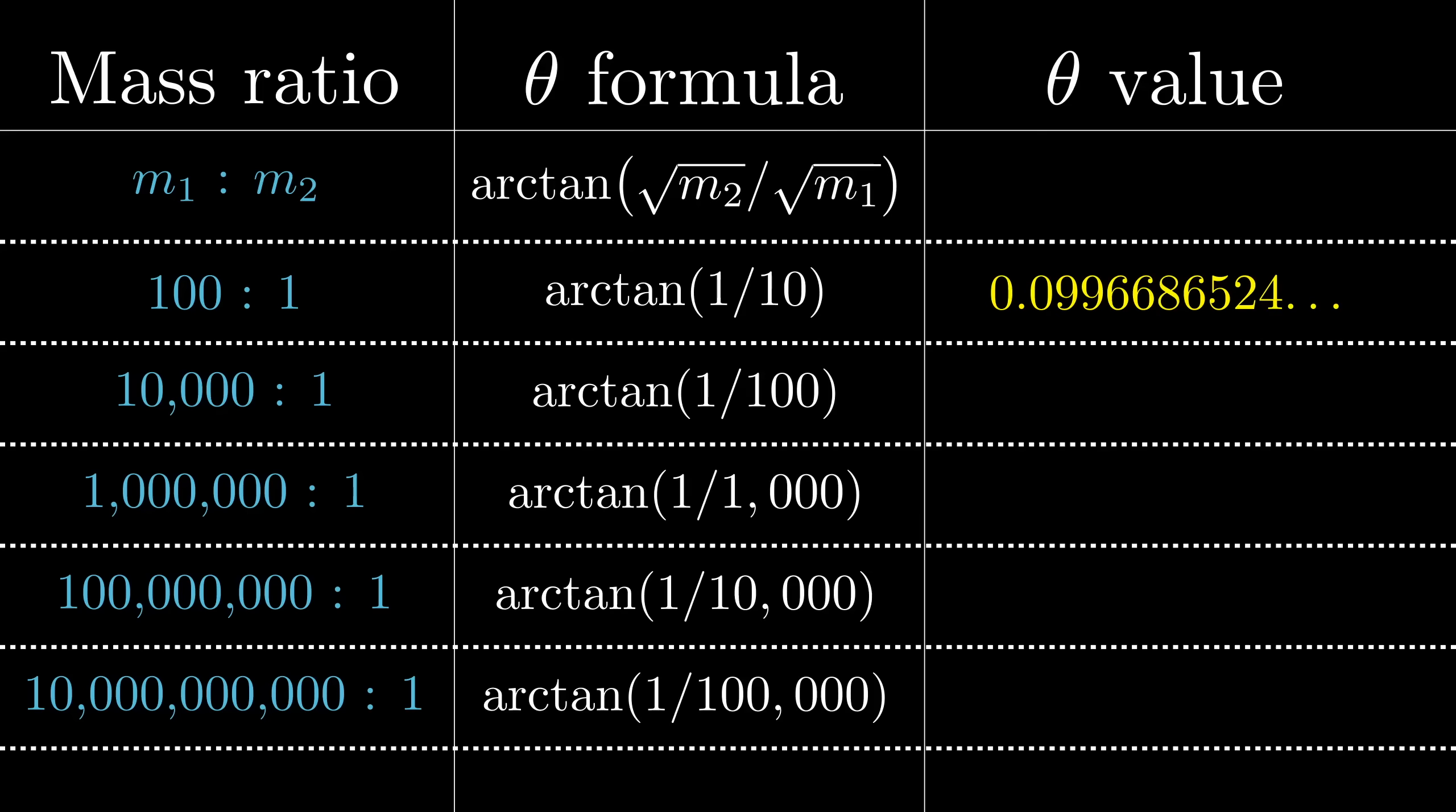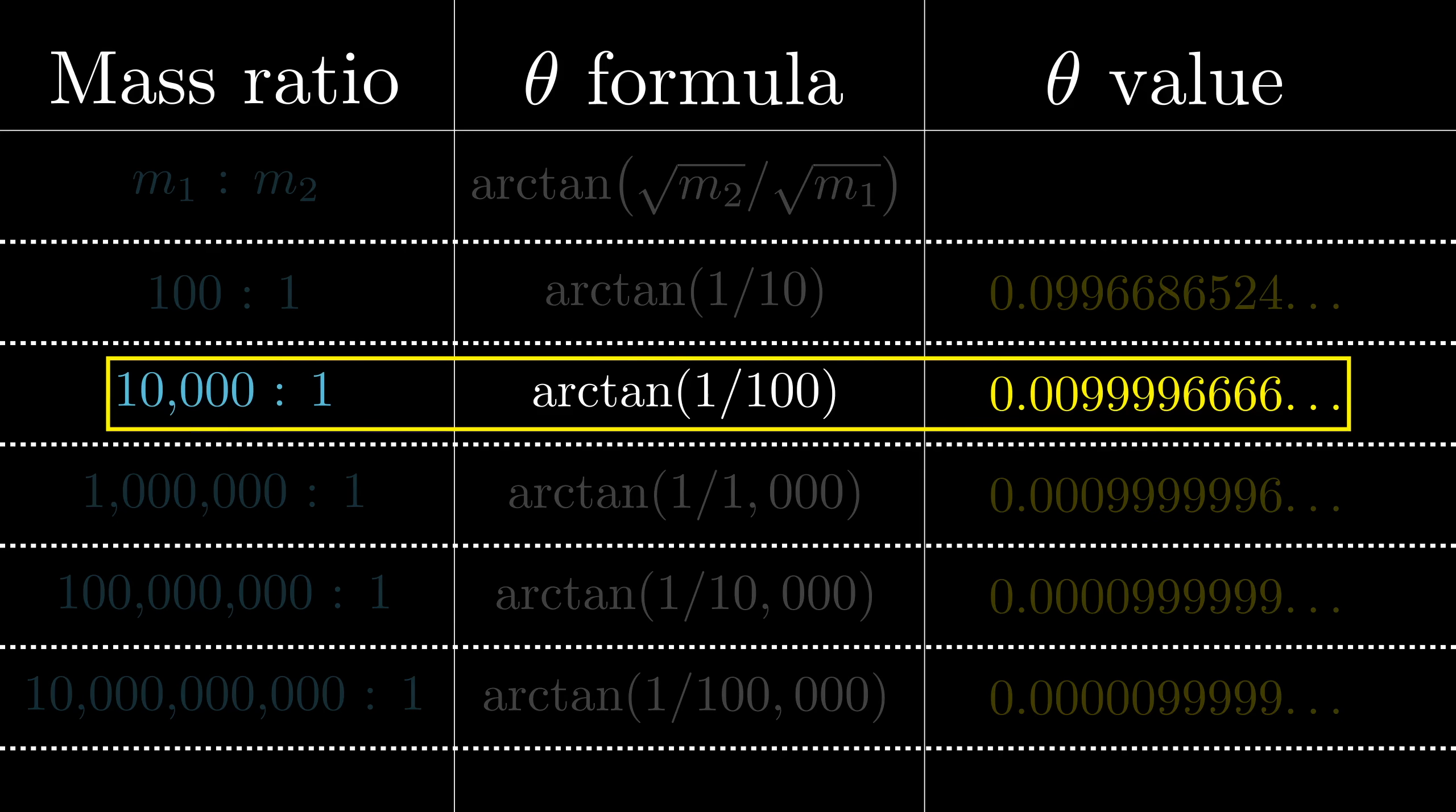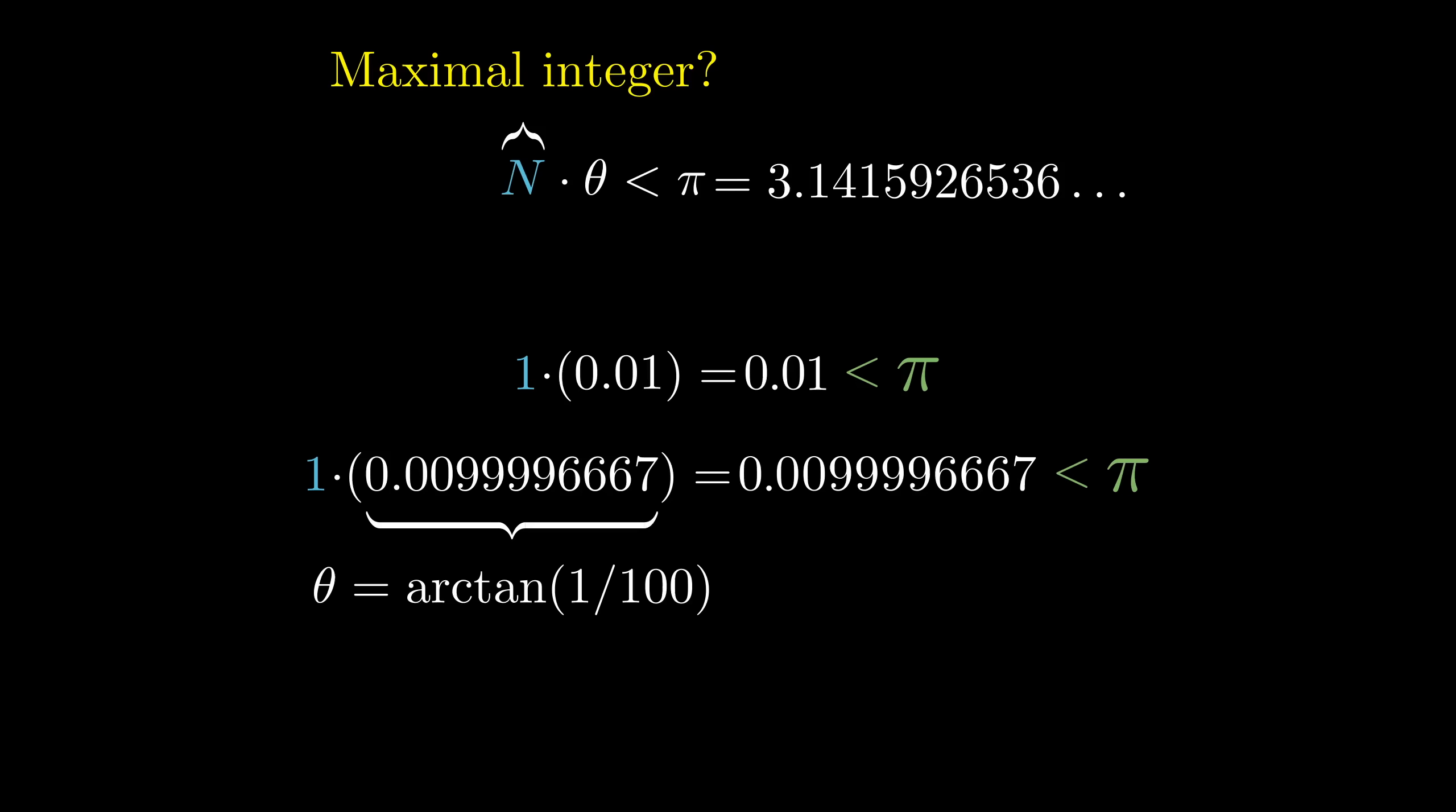If you go ahead and plug these into a calculator, what you'd notice is that the inverse tangent of such a small value is actually quite close to the value itself. For example, arc tan of 1 over 100, corresponding to a big mass of 10,000 kilograms, is extremely close to 0.01. In fact, it's so close that for the sake of our central question, it might as well be 0.01. And what I mean by that is, analogous to what we saw a moment ago, adding this to itself as many as 314 times won't surpass pi, but the 315th time would.